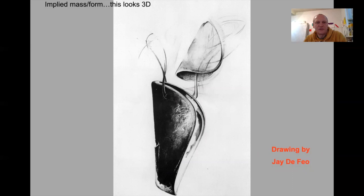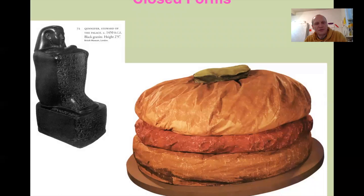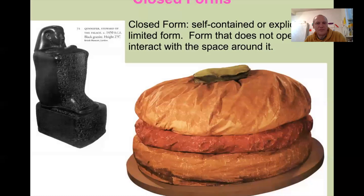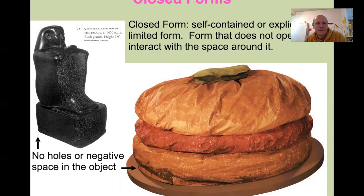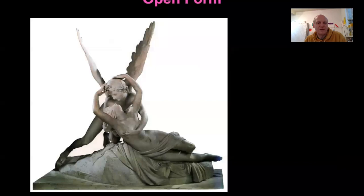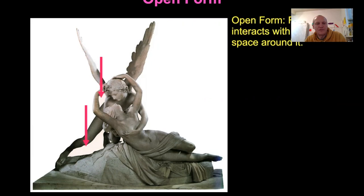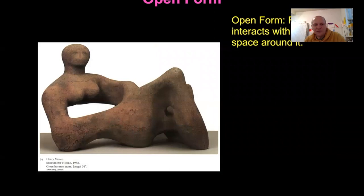Here's some implied mass — it looks three-dimensional, but in reality it's not; it's a drawing. We've got closed form or closed mass: this is a giant hamburger by Claes Oldenburg. These are all contained feeling — big and blocky, no holes in them, no negative space. And then we've got something like this which is more open form, where we see all the holes happening in the interaction with positive and negative space.